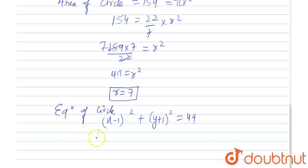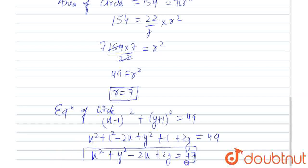So, we can simplify this using the formula a squared plus b squared minus 2ab. x squared plus 1 minus 2x plus y squared plus 1 plus 2y equals 49. And then we will be getting x squared plus y squared minus 2x plus 2y equals 47. After simplifying, we will be getting this equation: x squared plus y squared minus 2x plus 2y equals 47. So, this is the final answer.